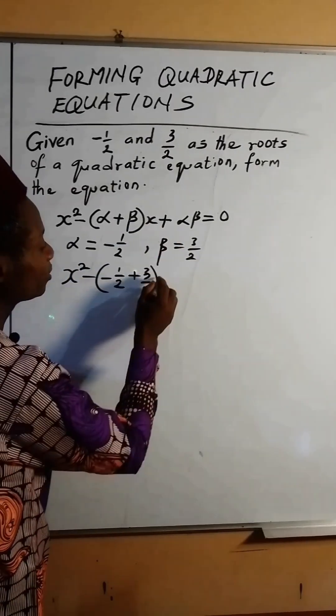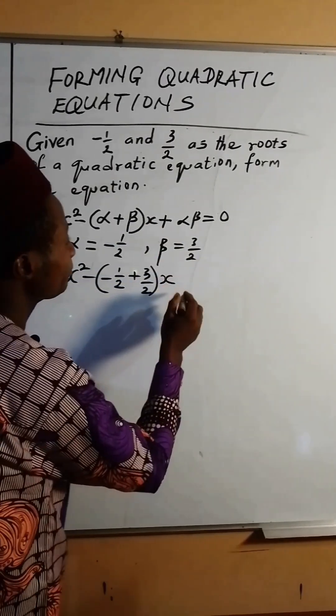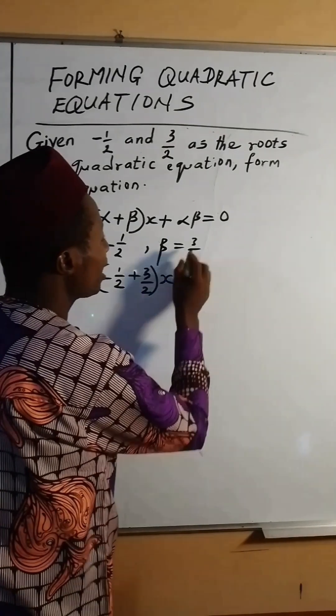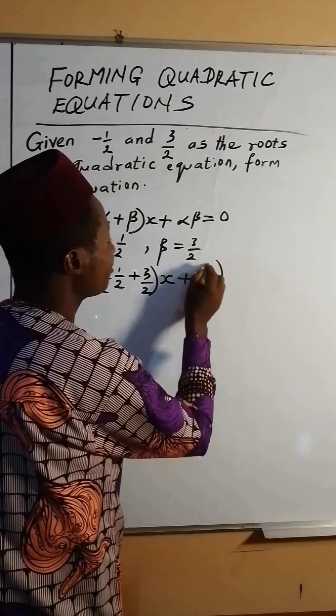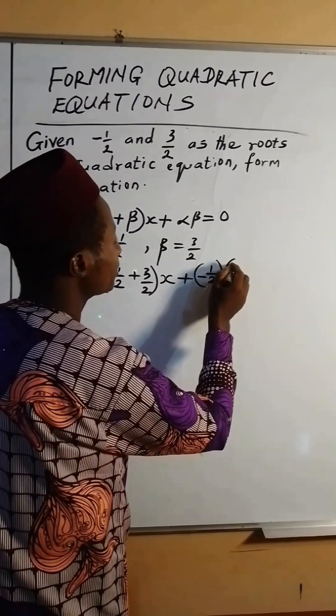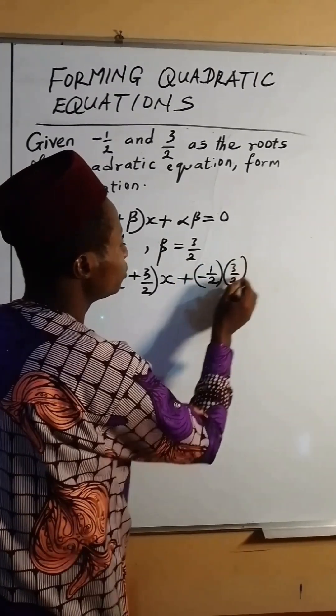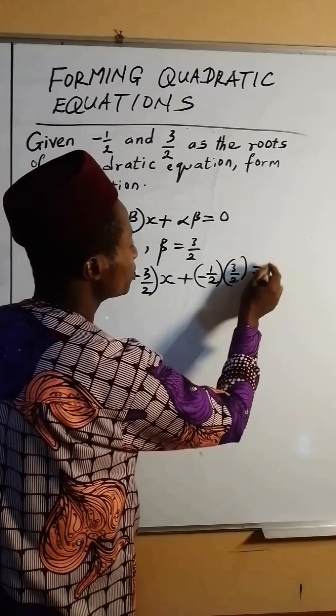Substitute this root here. So let us do it now. We want to substitute the root: x squared minus, here is alpha, which is minus half, and here is beta, which is plus 3 over 2. Then this is x, so bring in x here. Then plus alpha beta, which is minus half, open brackets, 3 over 2, equals 0.